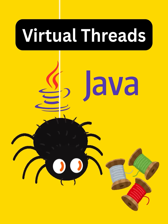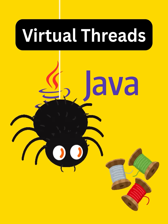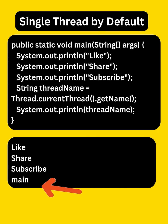Today, let's understand the concept of virtual threads in Java. By default, Java runs code on a single thread, known as the main thread, executing code sequentially.